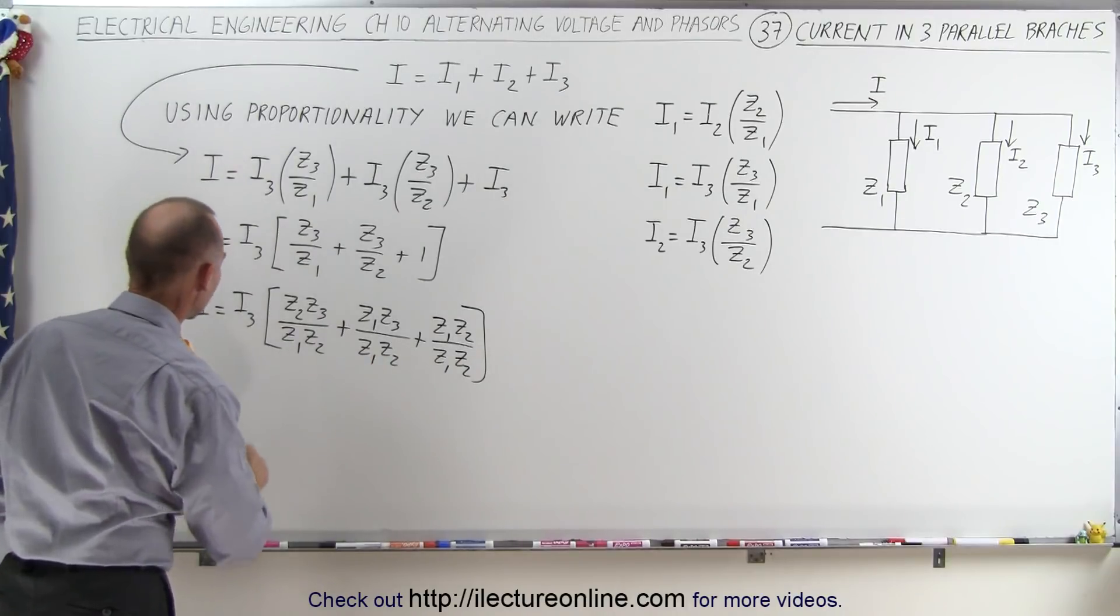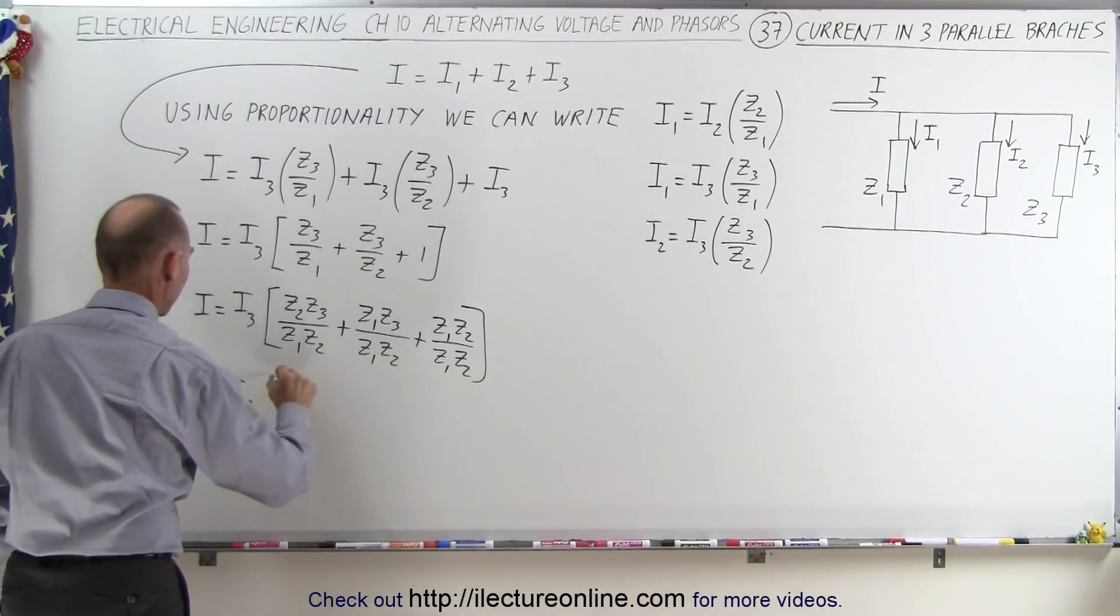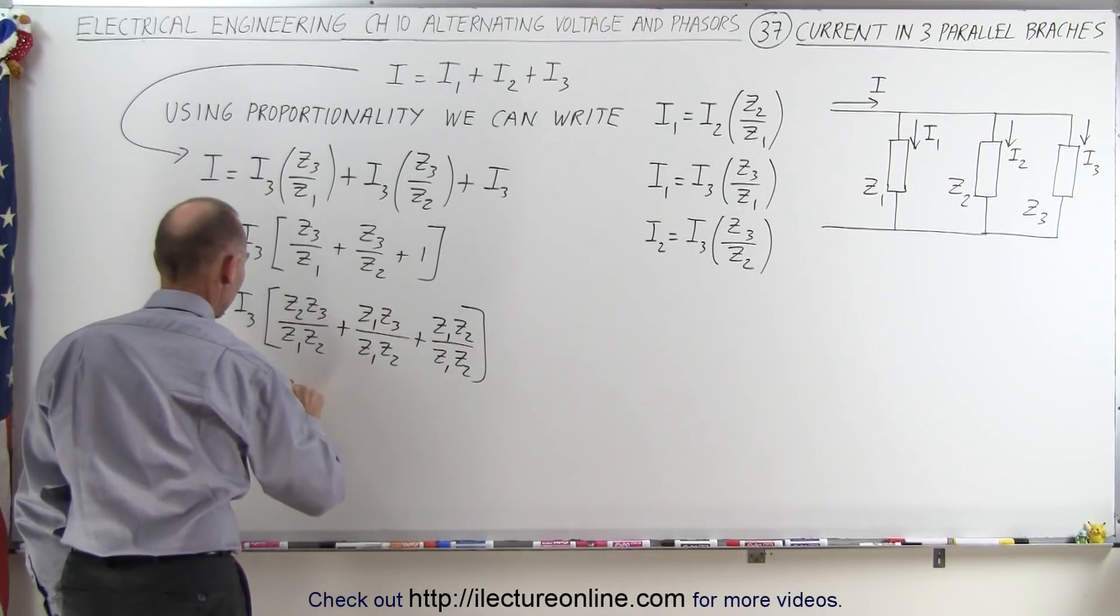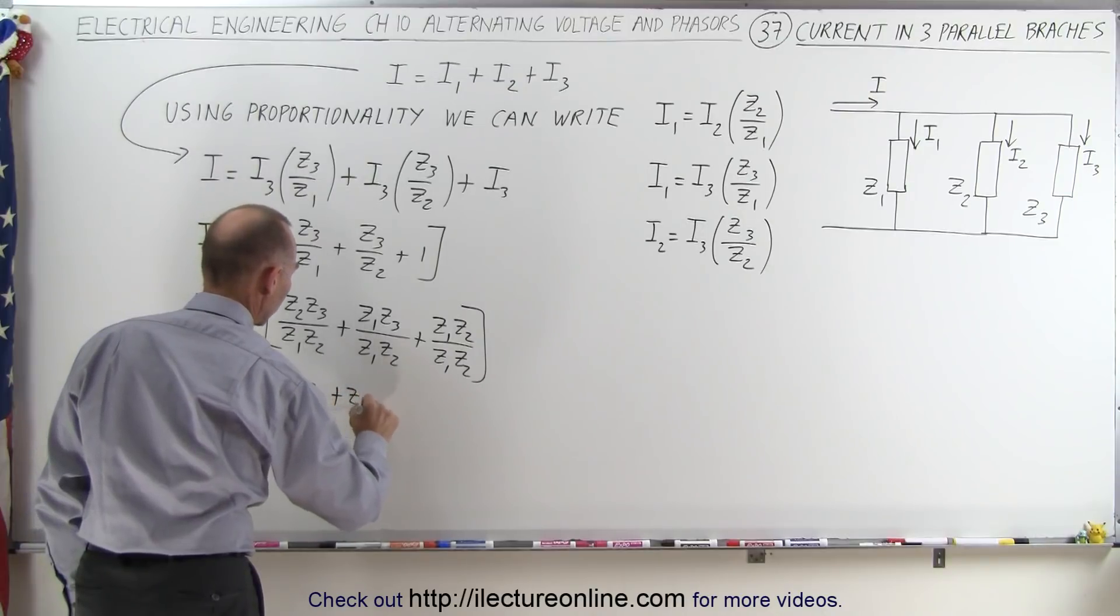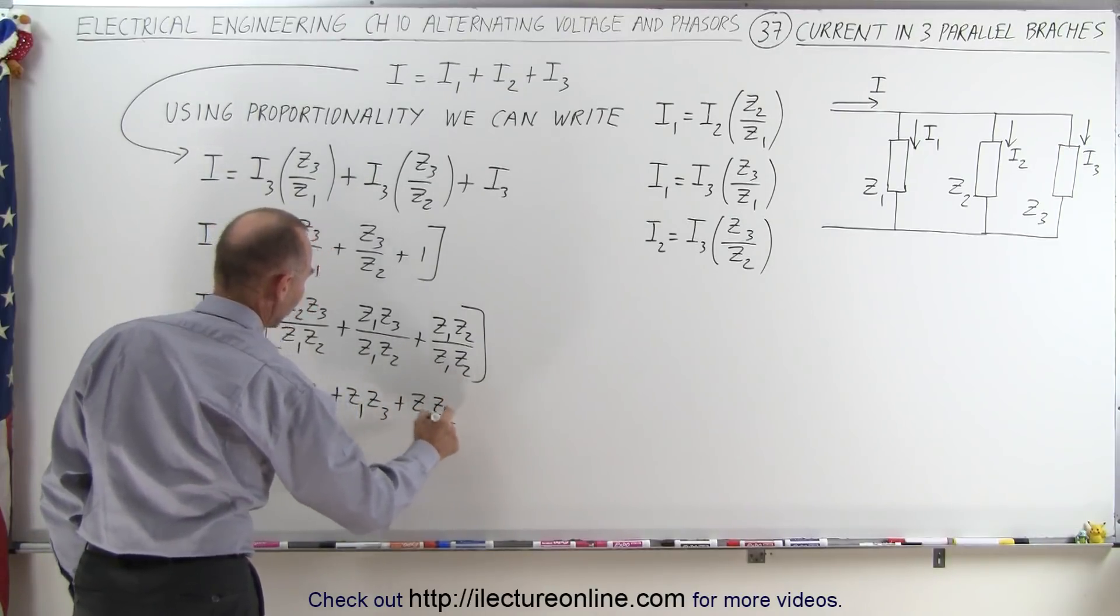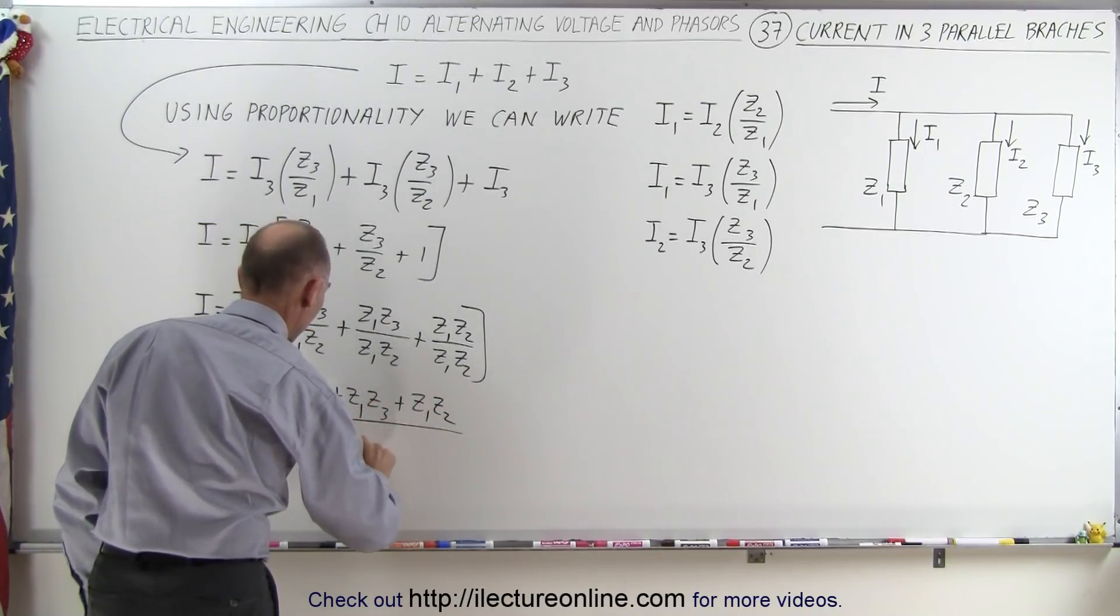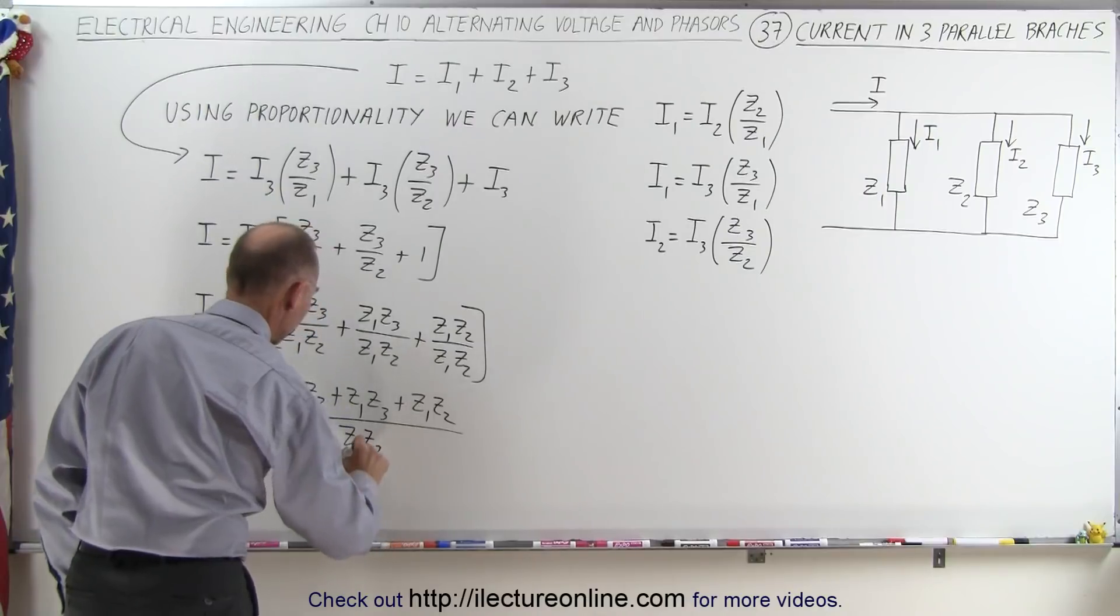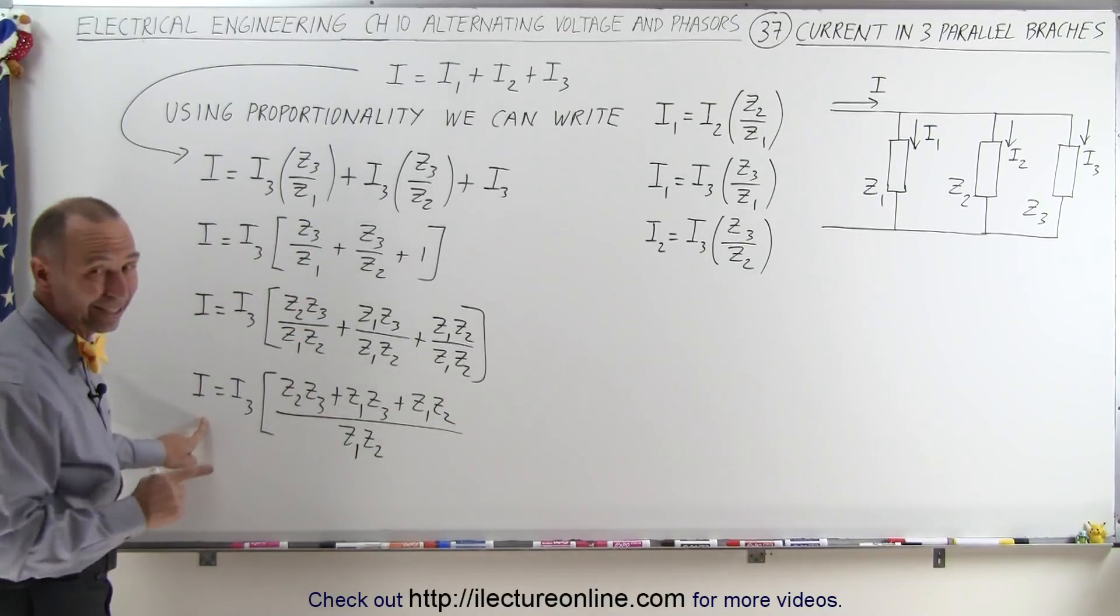Now notice we have the common denominator, so we can write that I is equal to I3 times, in the numerator we end up with Z2 Z3 plus Z1 Z3 plus Z1 Z2. That's basically the product of every combination, divided by Z1 times Z2.